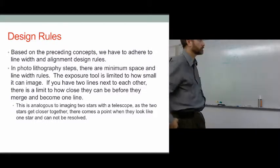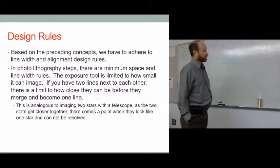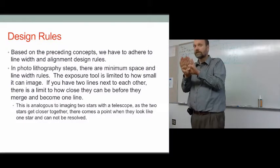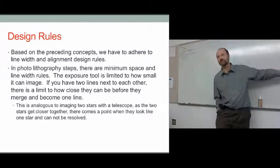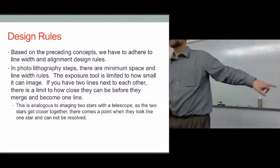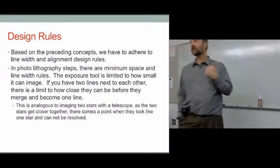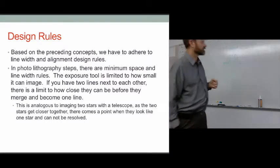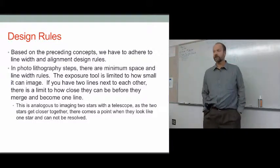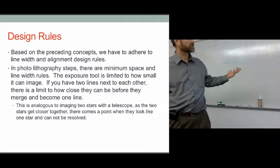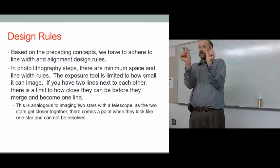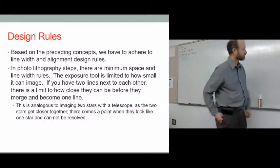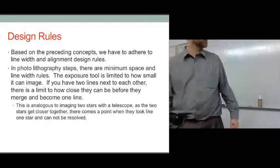If you go too small, structures won't work as sensors and actuators because there's not enough mass, area, or space for them to work. If you have two lines next to each other, there's a limit to how close they can get before they merge — analogous to looking at two stars through a telescope: if the telescope isn't good enough, they look like one star. Similarly, if you design two lines too close together, they'll merge. They'll bridge and create a short.